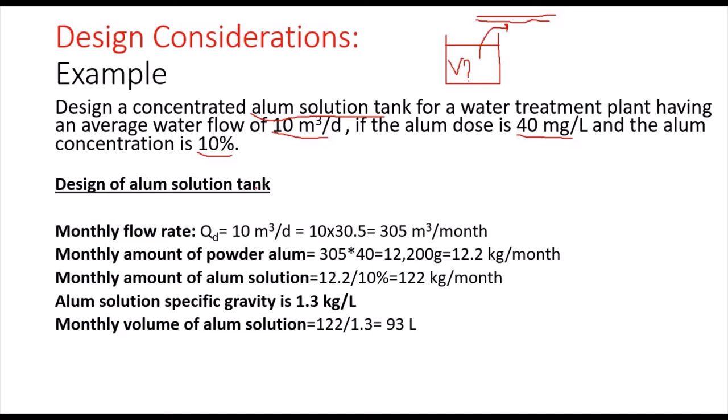Now first of all, we will fill this solution tank once a month. You can choose to fill it once a week, but in this example, we will be filling this solution tank every month. So that's why we will have to convert the 10 cubic meters per day into months. We will multiply it by the average days per month, which is 30.5. So 10 times 30.5 will be 305 cubic meters per month.